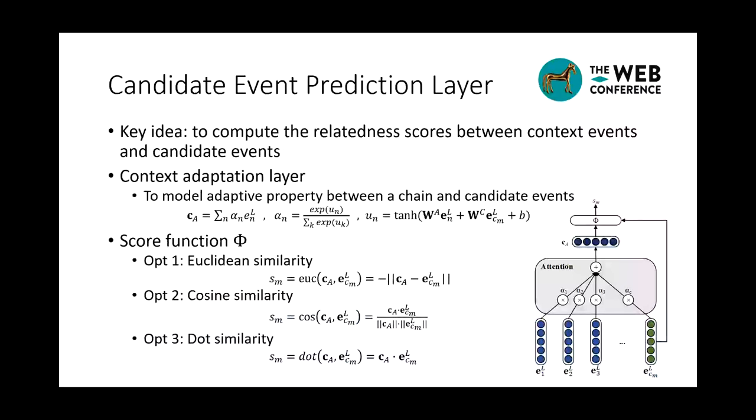In the third part, after obtaining the representation for each event, we can get relatedness scores by comparing the context event chain with its candidate events. Here, we adopt an attention mechanism to calculate the relative importance of each candidate event according to the current candidate event.